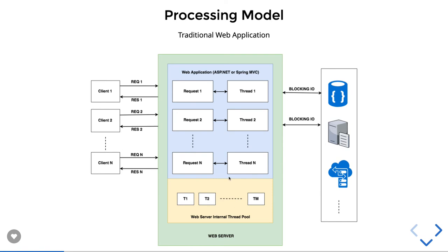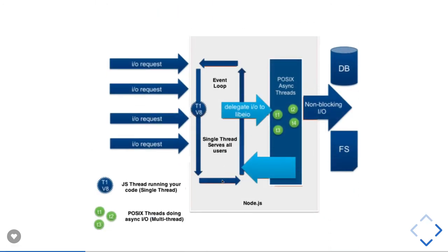One by one, the server keeps executing those requests. Whatever task each request performs — reading from the database or writing to the database — those calls are blocking. You can't do two different writes or two different reads simultaneously. So even if there are a hundred threads, only one thread executes at a time. This is a blocking nature: requests are blocked until the previous request is completed.